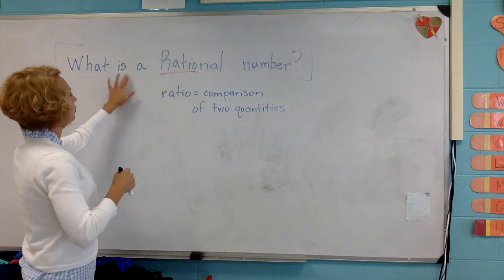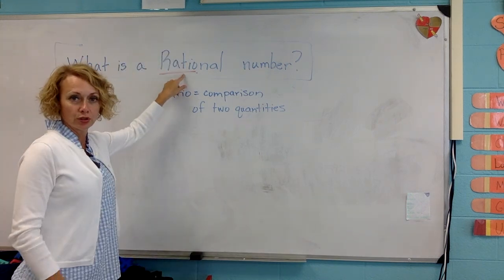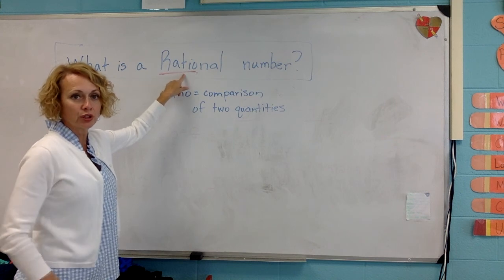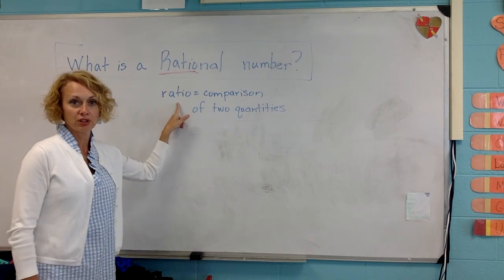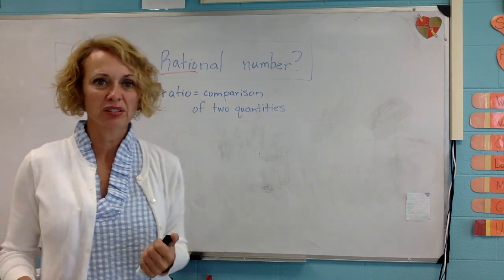So the question today is what is a rational number? And notice in the word rational I have a root word underlined. So the root word in rational is ratio. So a ratio is a comparison of two quantities, a comparison of two numbers.